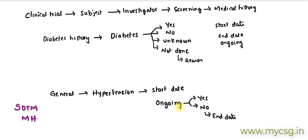In medical history, we report one row for each condition. For example, if the subject reported diabetes, hypertension, and gastric ulcer, we would have one row for each. Similarly, if a subject reported 10 other conditions, we would have 10 rows.